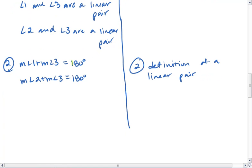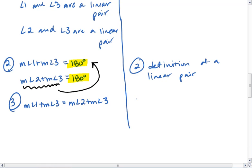Notice we have 180, 180. So we're going to take the measure of angle 2 plus the measure of angle 3 and substitute that for the 180 up here. This gives us the measure of angle 1 plus the measure of angle 3 equals the measure of angle 2 plus the measure of angle 3. And this is by substitution.